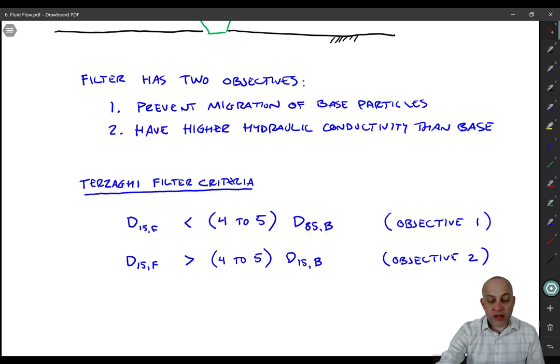And then it also has to have higher hydraulic conductivity than the base. So what we do there, what Terzaghi said, was that the D15 size of the filter now has to be greater than 4 to 5 times the D15 size of the base.